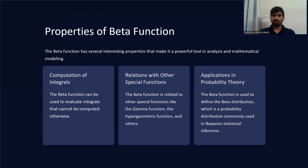Looking at the properties of the beta function, they have several interesting properties that make it a powerful tool in analysis and mathematical modeling. The first is computation of integrals — the beta function can evaluate integrals that cannot be computed otherwise. Second is its relation with special functions like the gamma function and hypergeometric function. Third is its application in probability theory, where it defines the beta distribution, commonly used in Bayesian statistical inference.